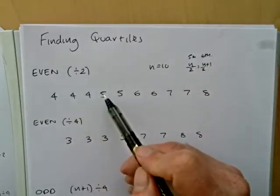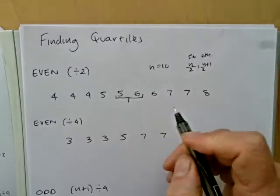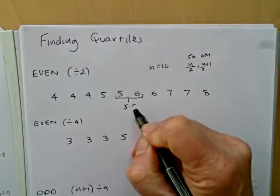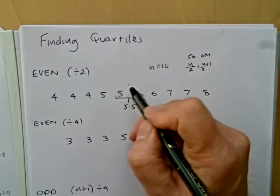So we're looking for the fifth and sixth numbers. So there's our fifth and sixth. We add them together. You'll know this from previous work. We'll add them together and divide by 2 for your second quartile.